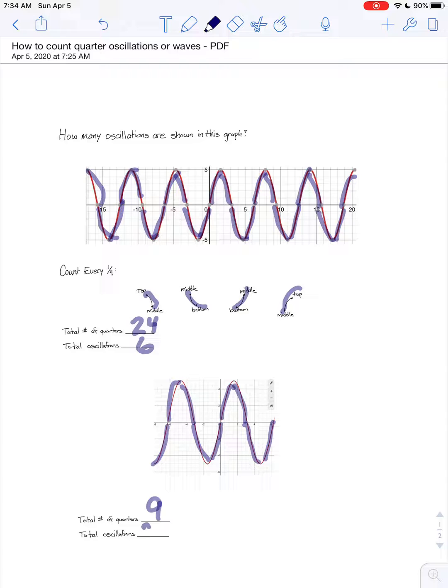So there are a total of 9 quarters, or 2.25 complete waves or oscillations.